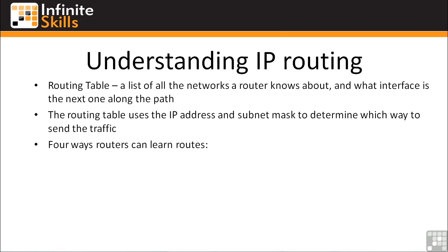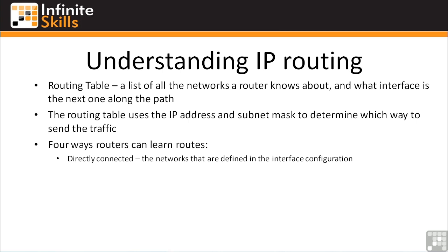So how do routers learn these routes to put in the routing table? There are four basic ways they can learn them. Number one is directly connected — these are the networks defined in the interface configuration. If you define an IP address of 10.1.1.0 with a subnet mask of 255.255.255.0, then the router knows that every IP address from 10.10.1.0 through 10.10.1.255 will be off this interface. You don't really have to tell the router about directly connected routes; it knows they're there just by virtue of what interfaces are configured.